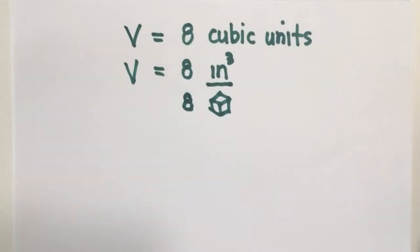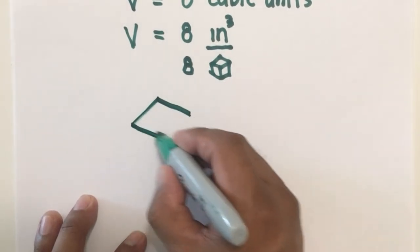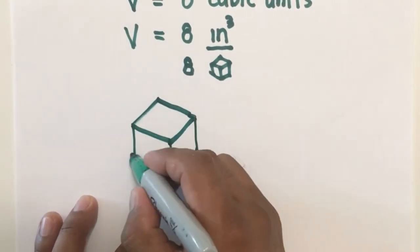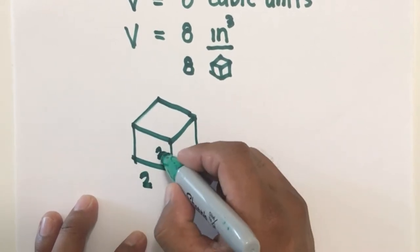But it's not practical that whenever you have a problem on volume, you bring along these cubes. So we are going to look for the pattern. The box that we are talking about has a dimension of 2 units here, it's 2 units here, 2 units here, and 2 units there.